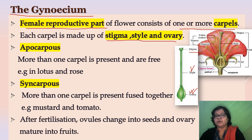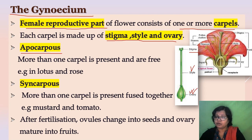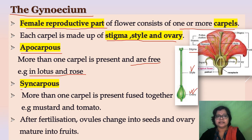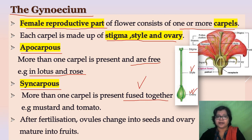If more than one carpels are present, then on the basis of their attachment — whether they are free or fused together — carpels are of two types. One is apocarpous gynoecium: if more than one carpels are free from each other, then this type is called apocarpous gynoecium, as we find in lotus, rose, etc. The next is syncarpous gynoecium: more than one carpels are present but fused together. Example: mustard, tomato, etc.